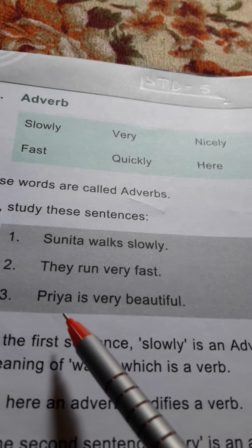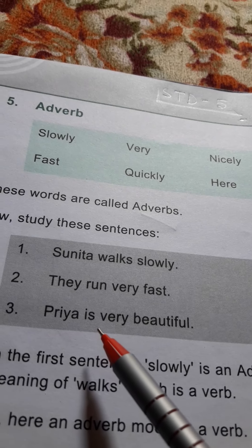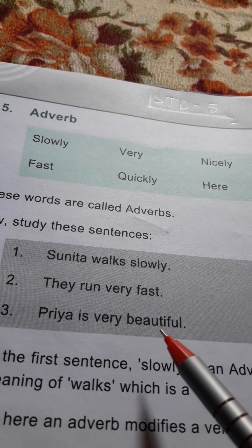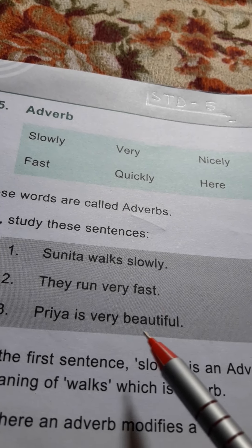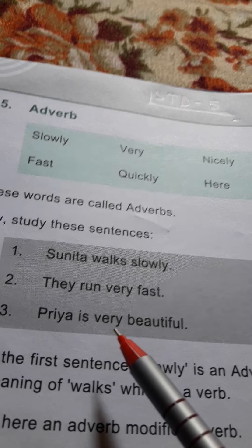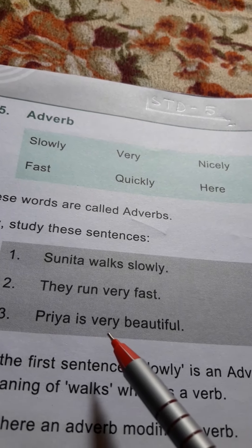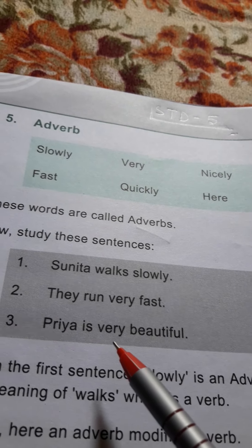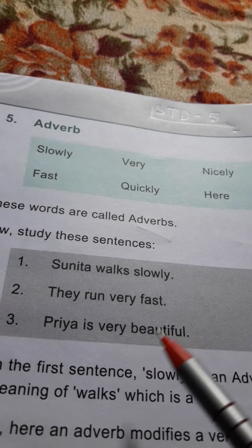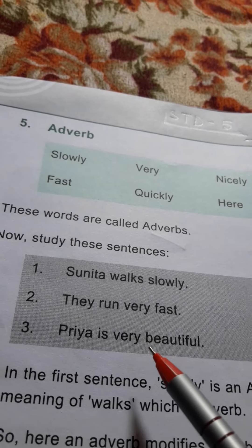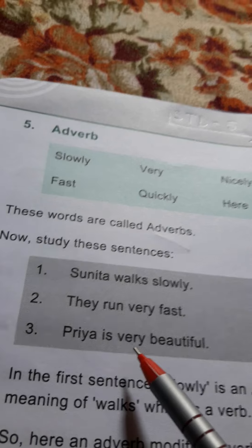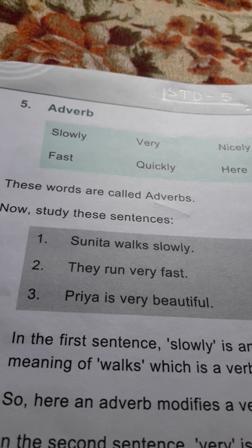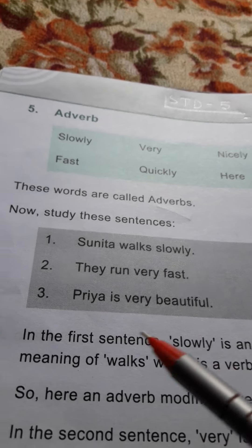Priya is very beautiful. Priya बहुत सुन्दर है. तो यहां जो adjective है beautiful, इसकी विशेषता बताता है very. तो हम देखते हैं कि adverb ऐसे शब्द हैं जो adjective की भी विशेषता बताते हैं. That means the word which modifies an adjective is called as an adverb.